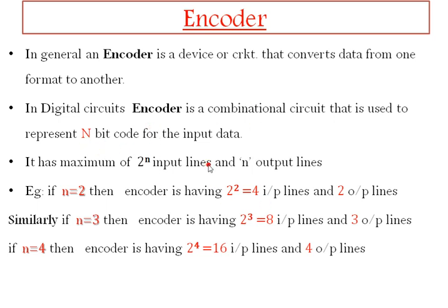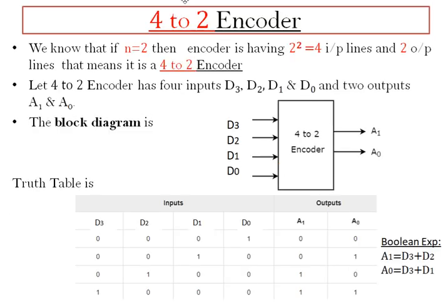For an encoder circuit we need 2-power-n input lines and n output lines. If n equals 2, output lines are 2 and input lines are 2-power-2 = 4. Similarly, if n equals 3, there are 8 input lines and 3 output lines. If n equals 4, there are 16 input lines and 4 output lines.